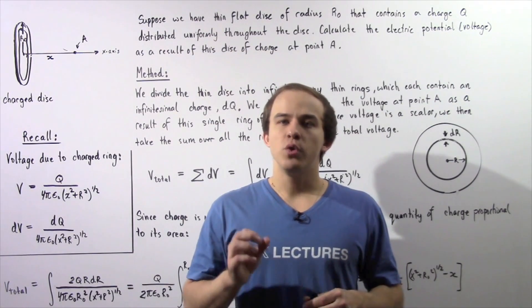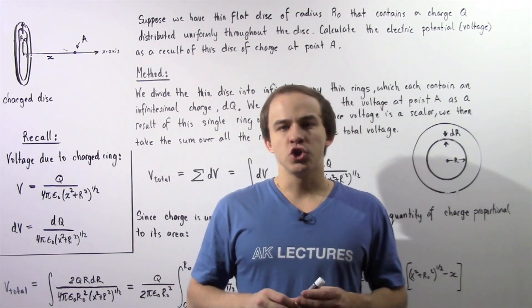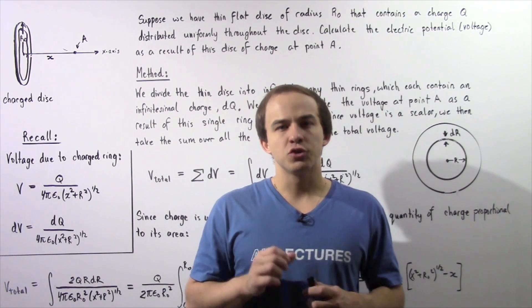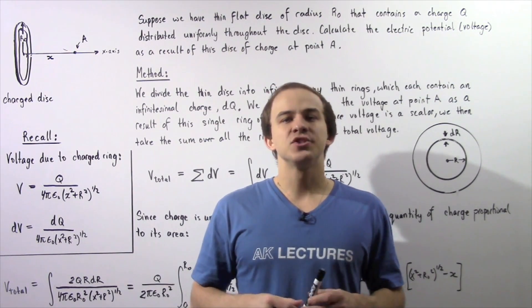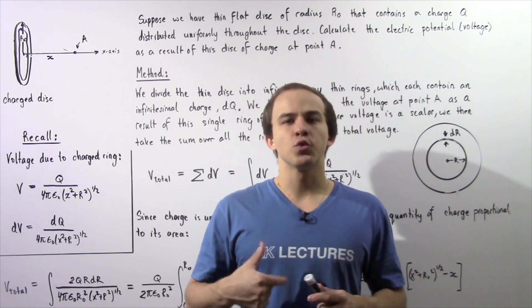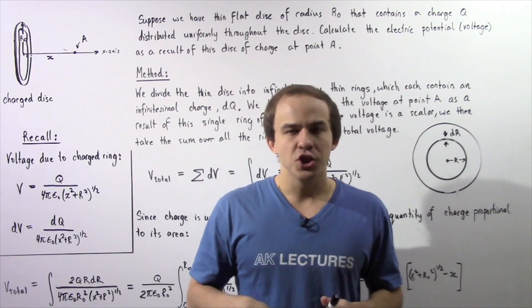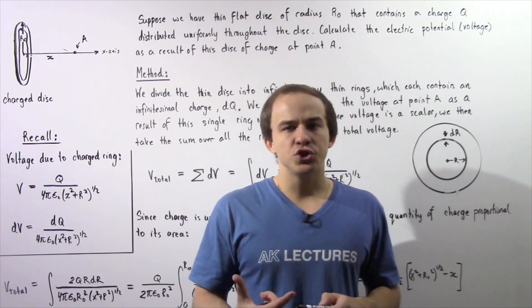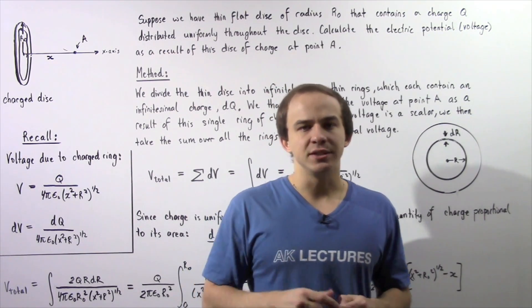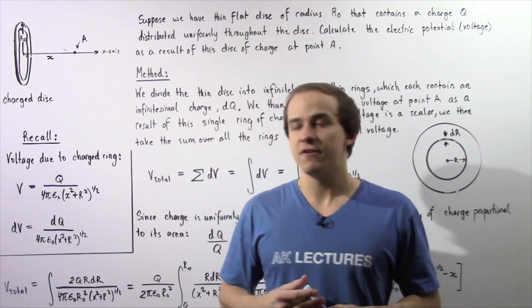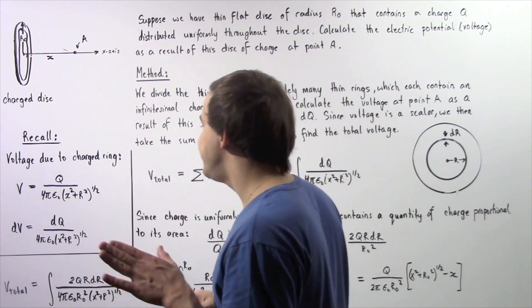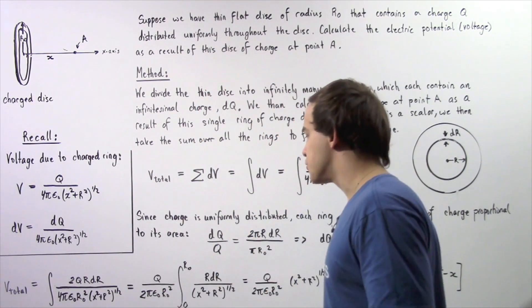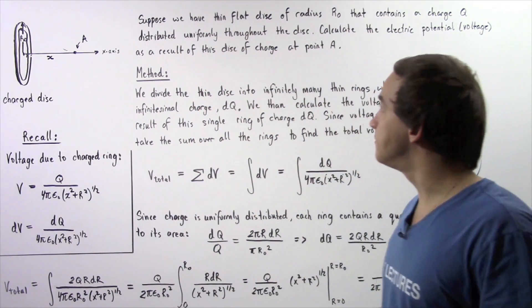In the previous lecture we were able to show the electric potential, the voltage as a result of a ring of charge. Now we're going to use that result to calculate the voltage as a result of a disk of charge. So let's begin.